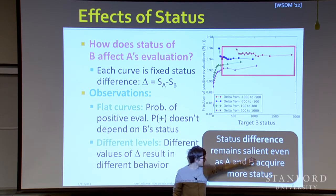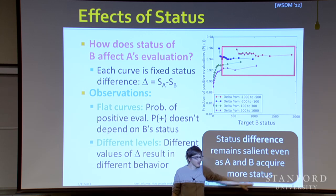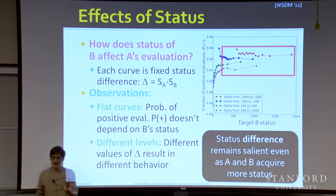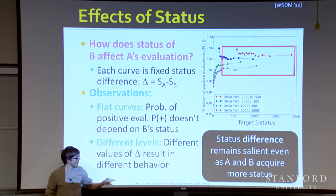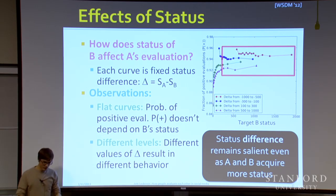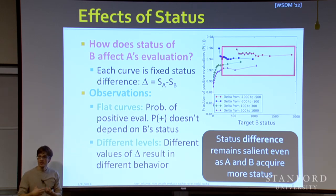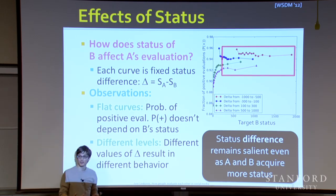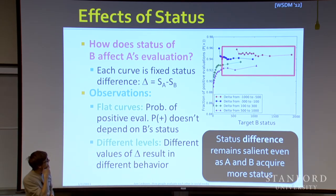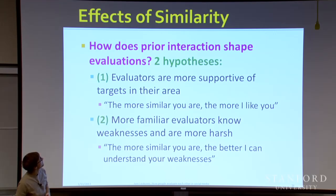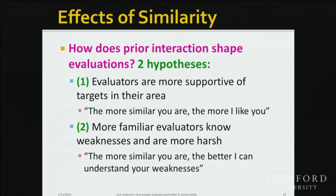It bothers you the same whether somebody earns $100 more a month than you, regardless of whether you're making $10,000 or $100,000 a year. The take-home message is that people give positive evaluations based on the status difference, and that status difference is the salient feature even as A and B acquire more status. This means that the idea of a user showing up and comparing herself to the target is how people actually make decisions.